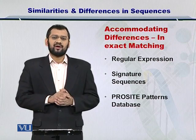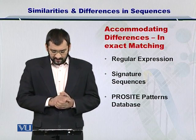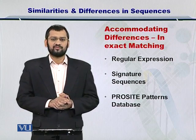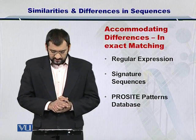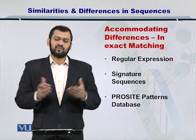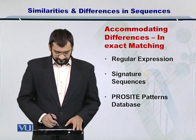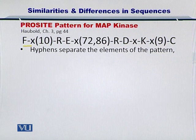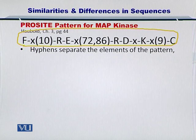Accommodating differences can be done by exact matching tools, and there are various options you can use, such as regular expressions, signature sequences, and the ProSite patterns database, which we will discuss later in detail. Let's take a look at the ProSite pattern. This is a pattern given in your textbook, chapter three, page 44.